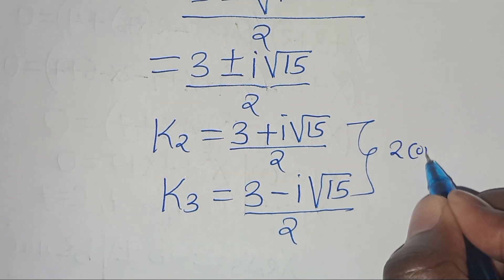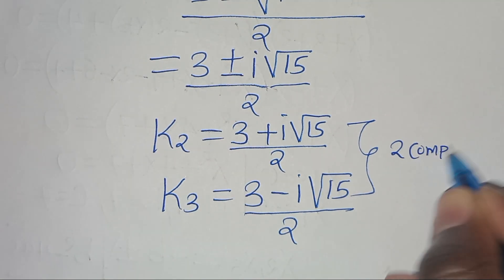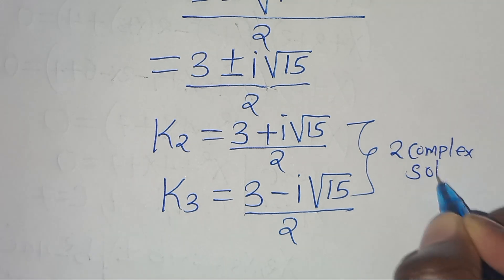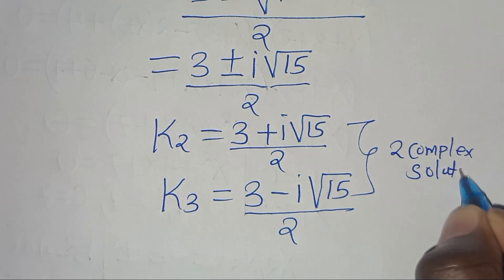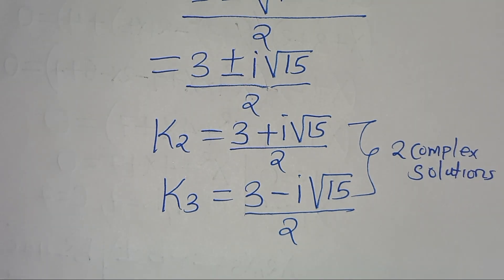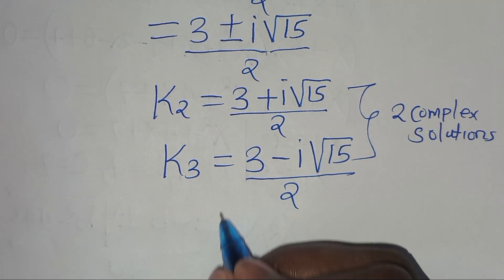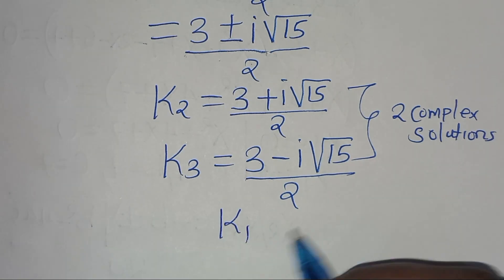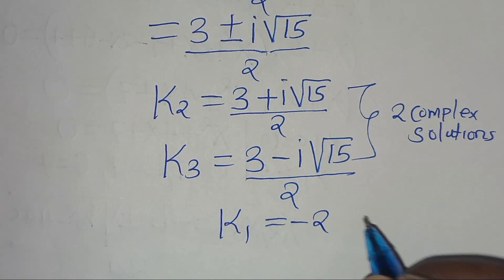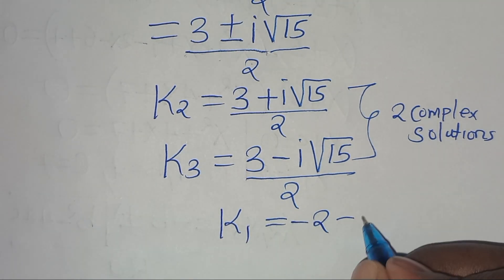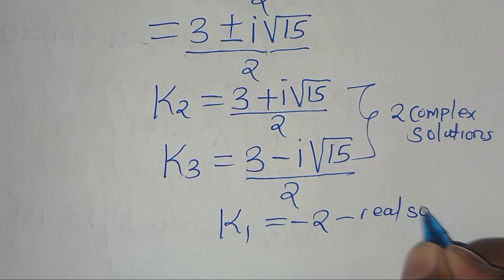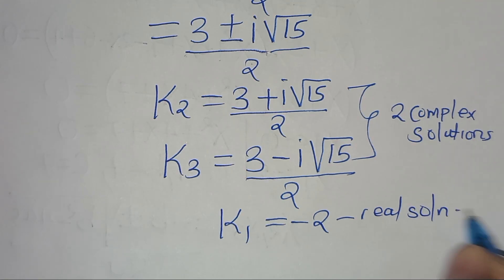We have two complex solutions, and only one real solution: k₁ = minus 2. This is the only real solution to this algebra problem.